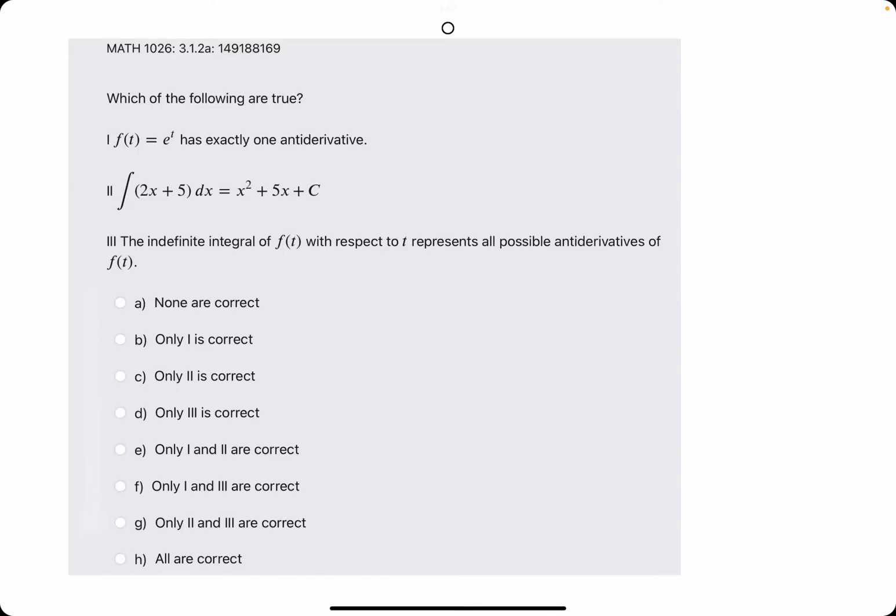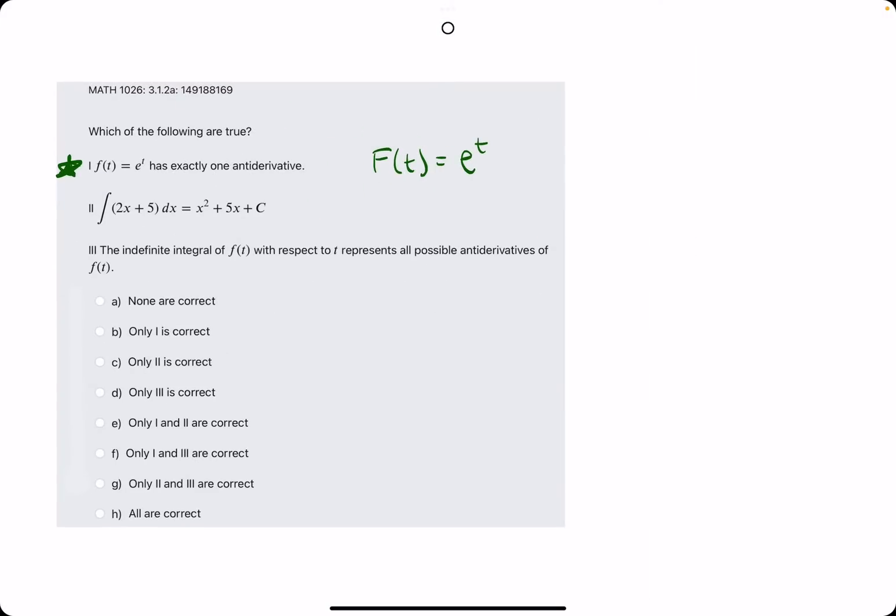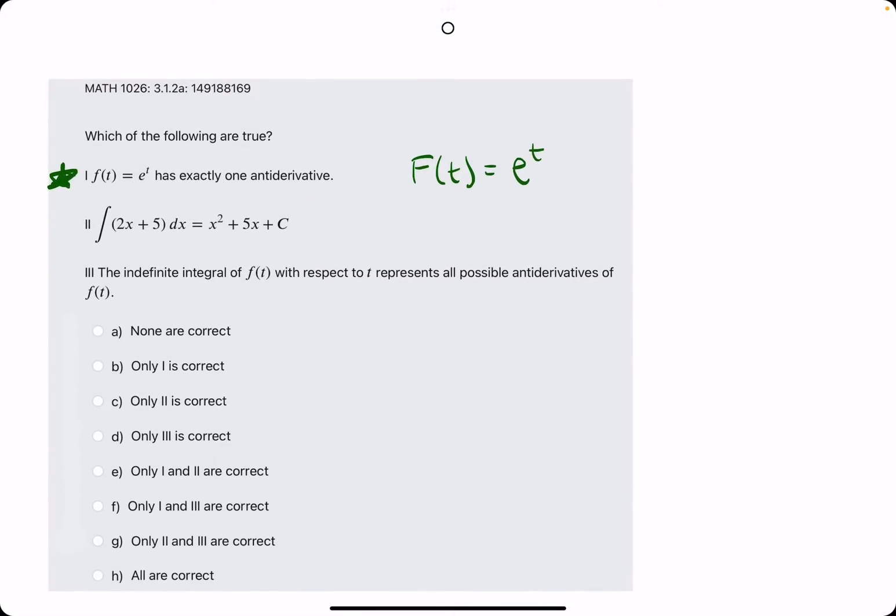Number one: f(t) = e^t has exactly one antiderivative. Well, let's see. If we found the antiderivative, capital F(t) of e^t, we know that the derivative of e^t is e^t, which means the antiderivative of e^t is e^t.